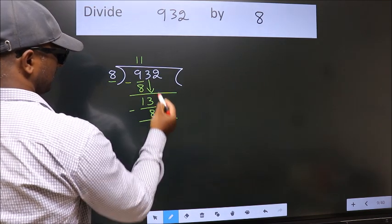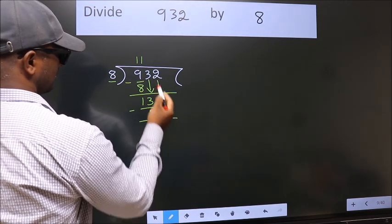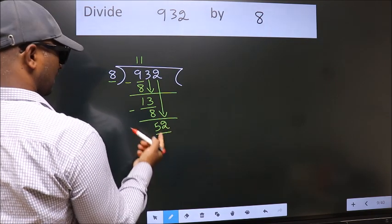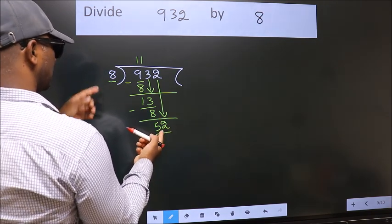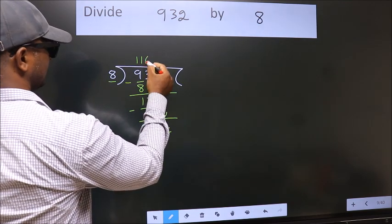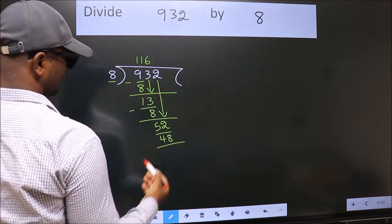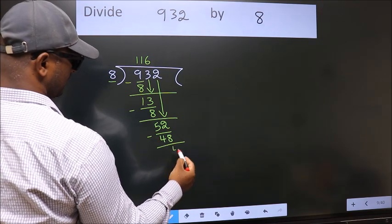After this, bring down the beside number. So 2 down. So 52. A number close to 52 in 8 table is 8, 6, 48. Now we subtract. We get 4.